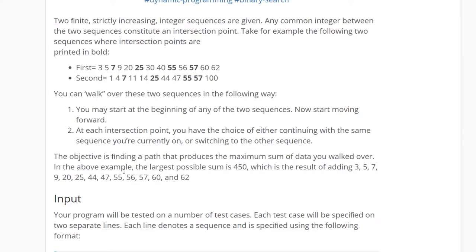The objective is finding the path that produces the maximum sum of data you have walked over. In the above example, the largest possible sum is 450, which is the result of adding 3, 5, 7, 9, 20, 25, 45, 44, 47, 55, 56, 57, 60, and 62.